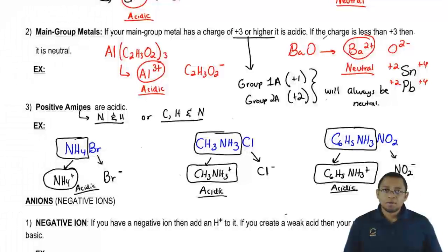Be careful. Which one are they giving you? If they're giving you SN plus 2 or PB plus 2, they're main group metals, they don't meet the minimum requirement of plus 3, so they would be neutral. But if you have SN plus 4 or PB plus 4, then they would meet the minimum requirements and they would be acidic. So that one's a little tricky, so remember that.